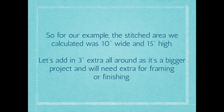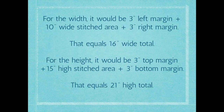So as per our example, the stitched area we calculated was 10 inches wide and 15 inches high. Let's add 3 extra inches all around for finishing and framing. For the width: 3 inches on the left, plus your 10-inch wide stitched area, plus 3 inches on the right, equals 16 inches wide total. For the height: 3 inches on the top, plus your 15 inches high, plus 3 inches on the bottom, equals 21 inches high total.